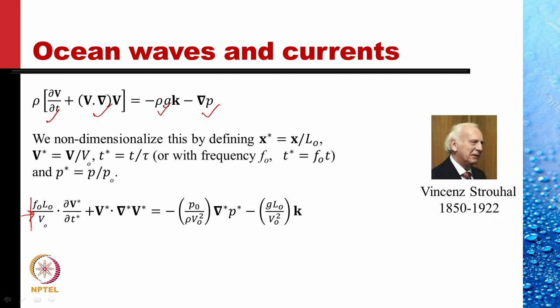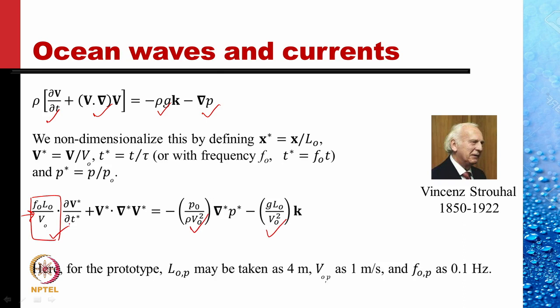So, in addition to Euler number and Froude number, the Strouhal number also plays a part. The prototype characteristic length is taken as 4 meters, the steady current velocity is 1 meter per second, and the frequency in the prototype is 0.1 Hz. We introduce a non-gravitational pressure difference p-script = p + rho g z − p naught, so that the right-hand side terms combine into a single term.